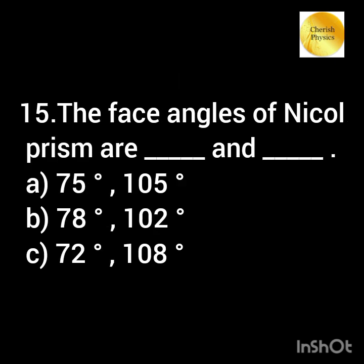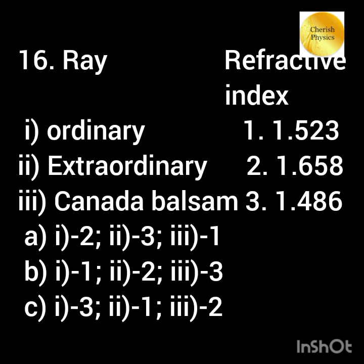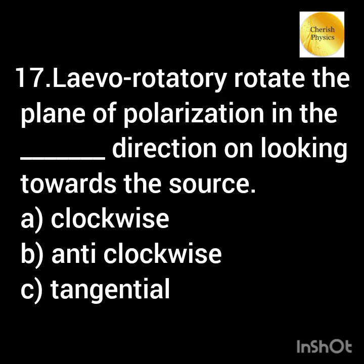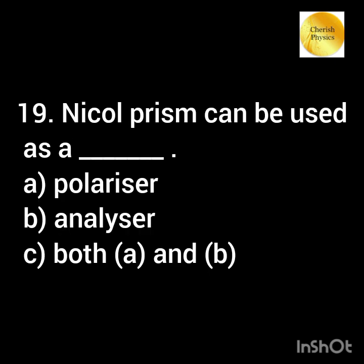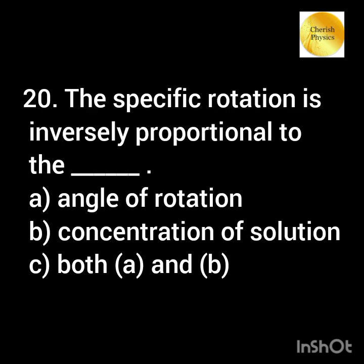The face angles of Nicol prism are dash. Match the refractive index to their corresponding terms. Levorotatory rotates the plane of polarization in the dash direction on looking towards the source. Light transmitted by Nicol prism is dash. Nicol prism can be used as a dash. The specific rotation is inversely proportional to the dash.